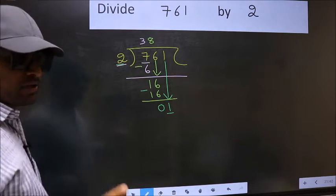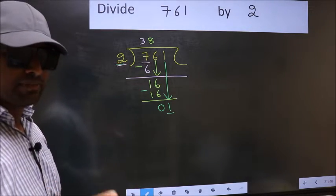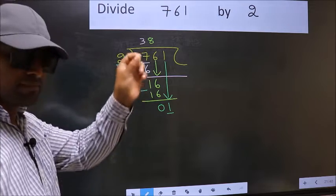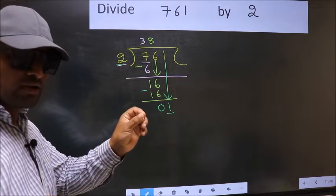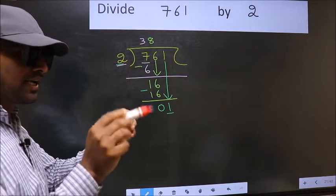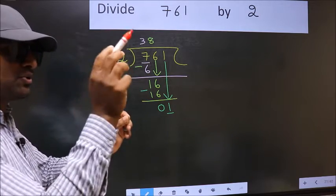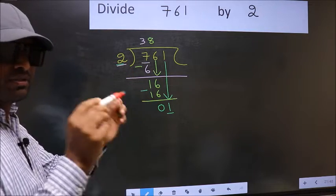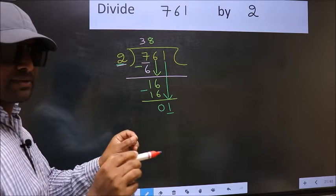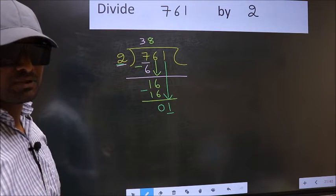And in the same step, you want to put a dot and take 0, which is wrong. I repeat: bringing the number down and also putting a dot and taking 0, both at the same step, you are not supposed to do.